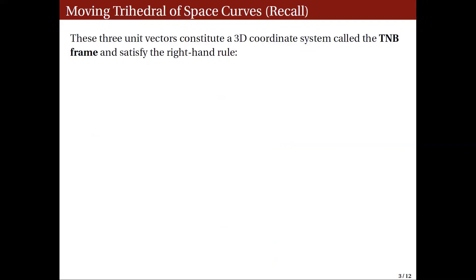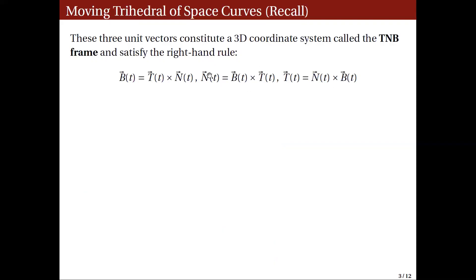These three unit vectors form a three-dimensional coordinate system called the TNB frame, and they satisfy the right-hand rule. We can also compute the three unit vectors alternatively: the unit normal vector N(t) can be computed as the cross product of B(t) with T(t), and the unit tangent vector T(t) equals N(t) cross B(t). In other words, we can compute one vector as the cross product of the other two.